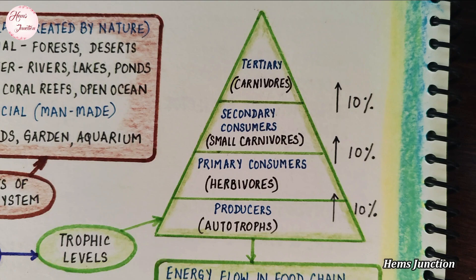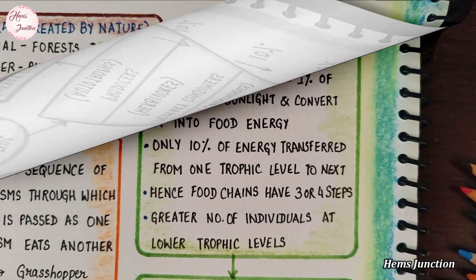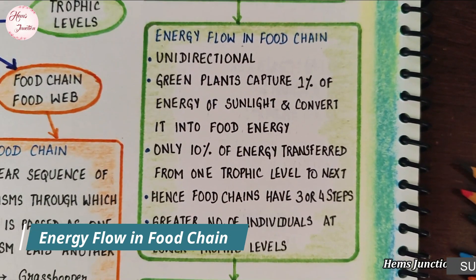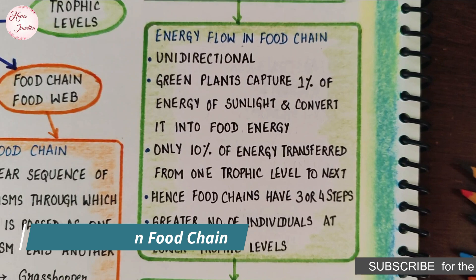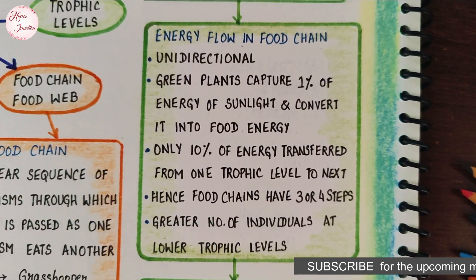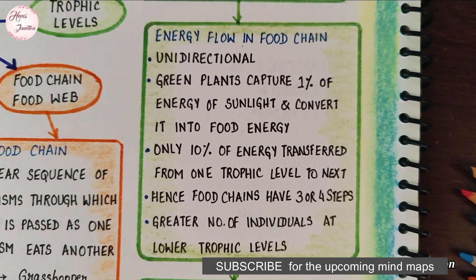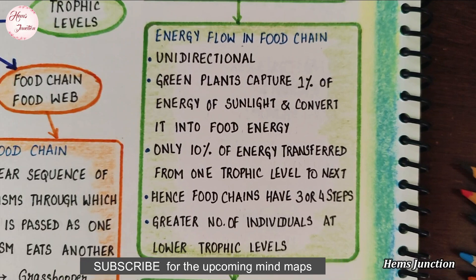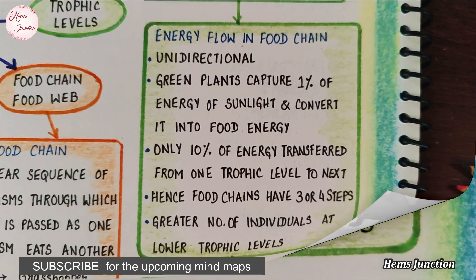Small carnivores or secondary consumers are at the third trophic level. Larger carnivores or tertiary consumers form the fourth trophic level. Energy flow in food chain is unidirectional — it flows from autotrophs to the next level in one direction. Only 10 percent of energy is transferred from one trophic level to the next.